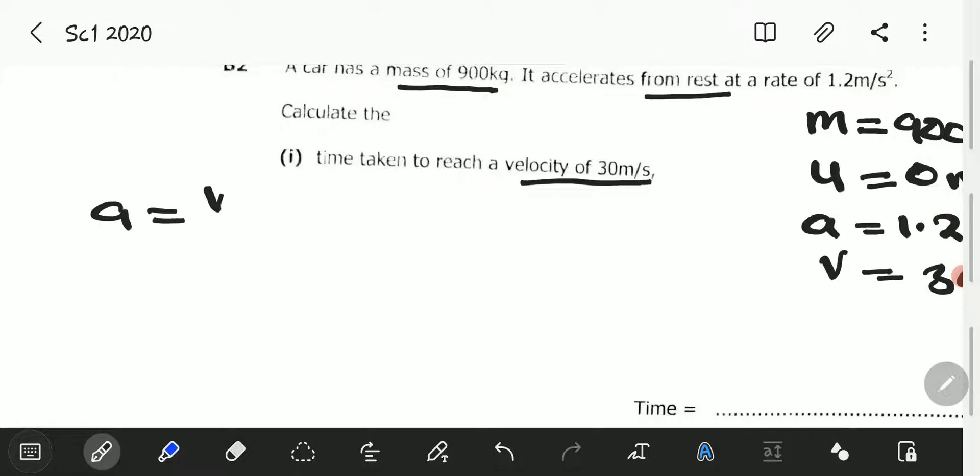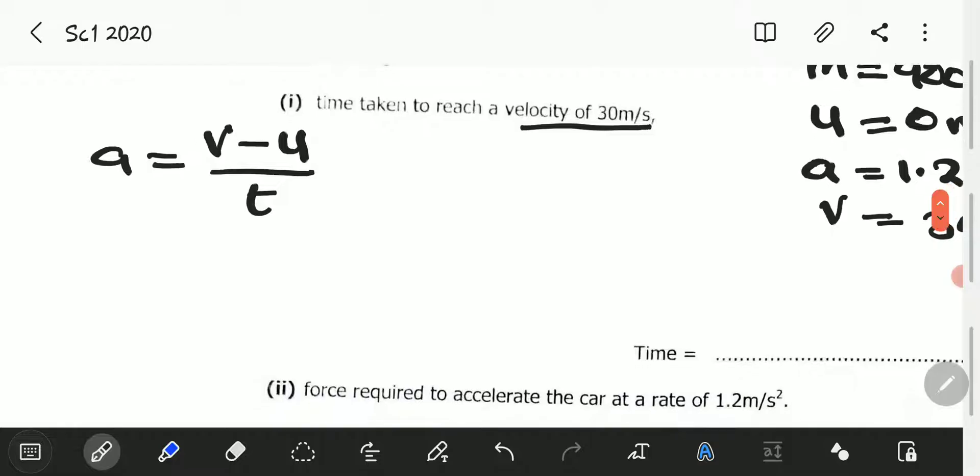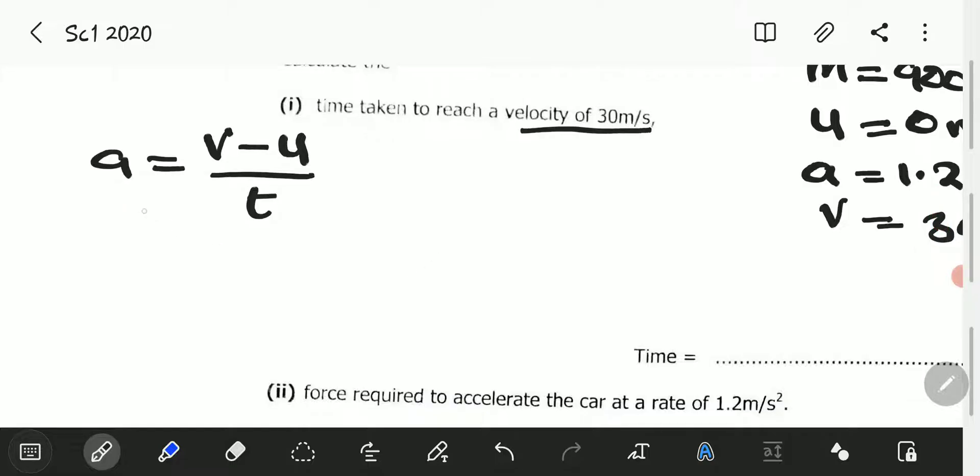Now we can use this data by saying acceleration is equal to final velocity minus initial velocity over time. We're not going to change the subject of the formula because we want to be as explicit as possible. We have our acceleration which is 1.2, equal to the final velocity 30 minus 0 over time.